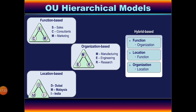OU hierarchical models — जब आप OU create करते हैं तो एक model follow करना होता है। There are three models: first — function based (different functions/tasks के आधार पर OU create किये जाते हैं जैसे sales, consulting and marketing); second — organization based (organization के type के according OU create किये जाते हैं जैसे manufacturing, engineering, research); third — location based (location के according OU create किया जाता है जैसे Dubai, Malaysia, India)। इसके अलावा hybrid model भी use किया जा सकता है जिसमें function, location और organization तीनों तरीके के OU को hybrid way में use किया जाता है।